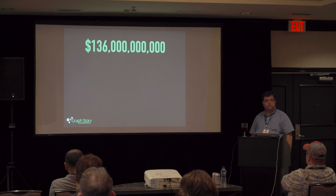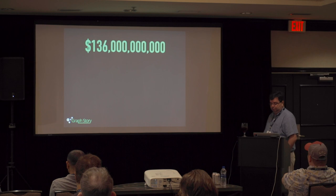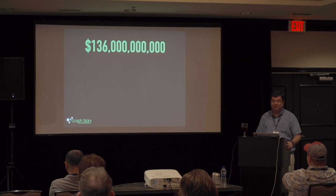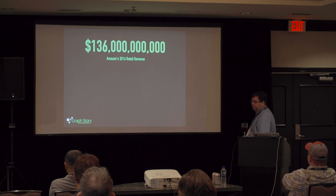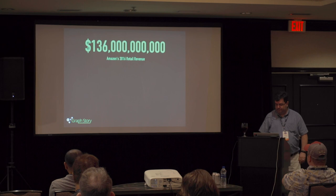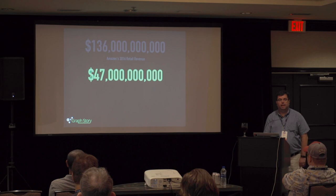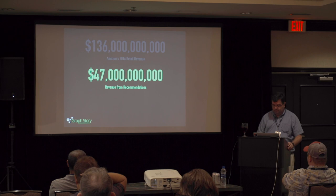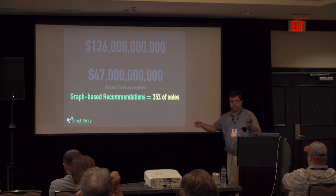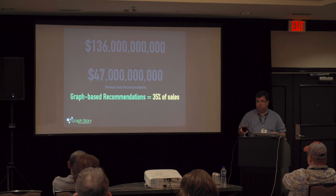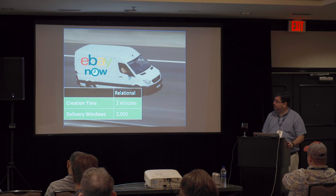Do you know what this number represents? It's retail revenue for Amazon — $136 billion, and that was three years ago. Any other guesses before I move on? It's revenue from recommendations at Amazon. 35% of their sales are based on saying this product goes with this product based on what you did, what you bought, maybe people you know. They know it works and continue to invest in it.